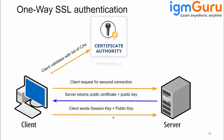In the handshake, two different keys are used: the client encrypts with the public key of the server, and the server decrypts using the private key of the server. When different keys are used for encryption and decryption, we call it asymmetric encryption — a computer network concept. So the handshake uses asymmetric encryption.